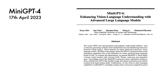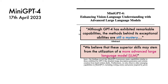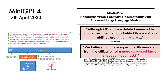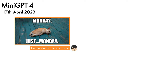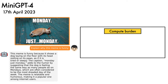Next, we have MiniGPT-4. The authors note that although GPT-4 has exhibited remarkable capabilities, the methods behind its exceptional abilities are still a mystery. They believe these superior skills may stem from the utilisation of a more advanced large language model. MiniGPT-4 takes in an image, passes it through a frozen Q-Former and ViT sourced from BLIP-2, and maps the result through a learned linear layer which produces an input to a frozen Vicuna model. The result is an impressively dense description of the image. Given a meme and a request to explain why it's funny, MiniGPT-4 comes up with a pretty good explanation.